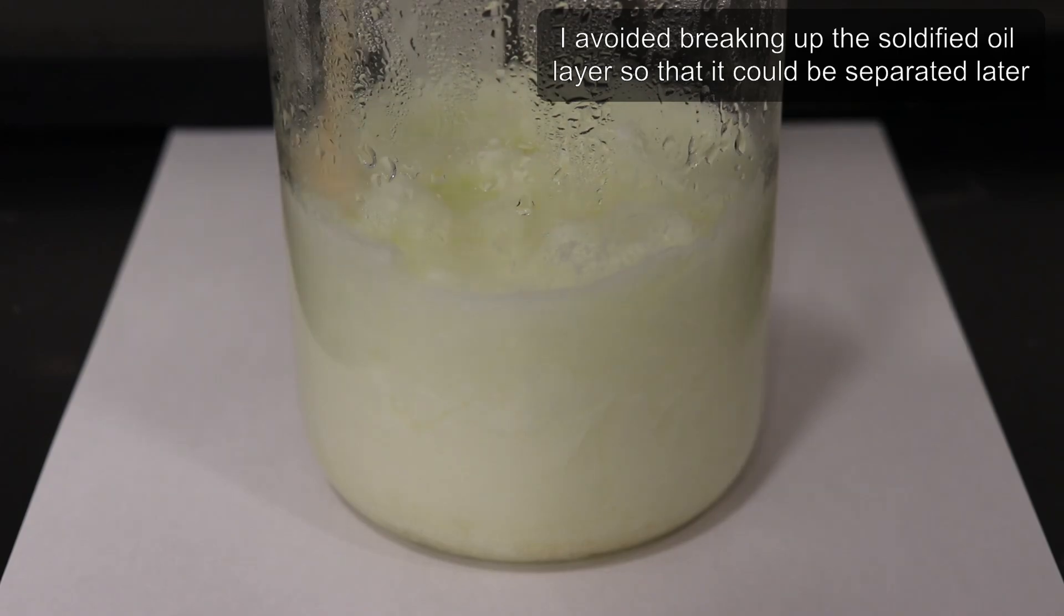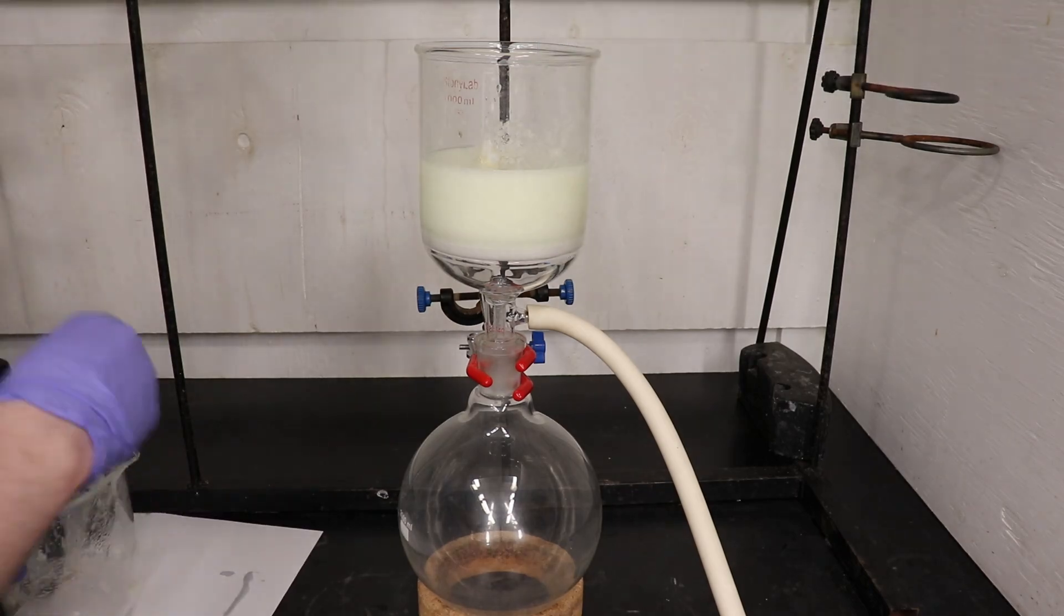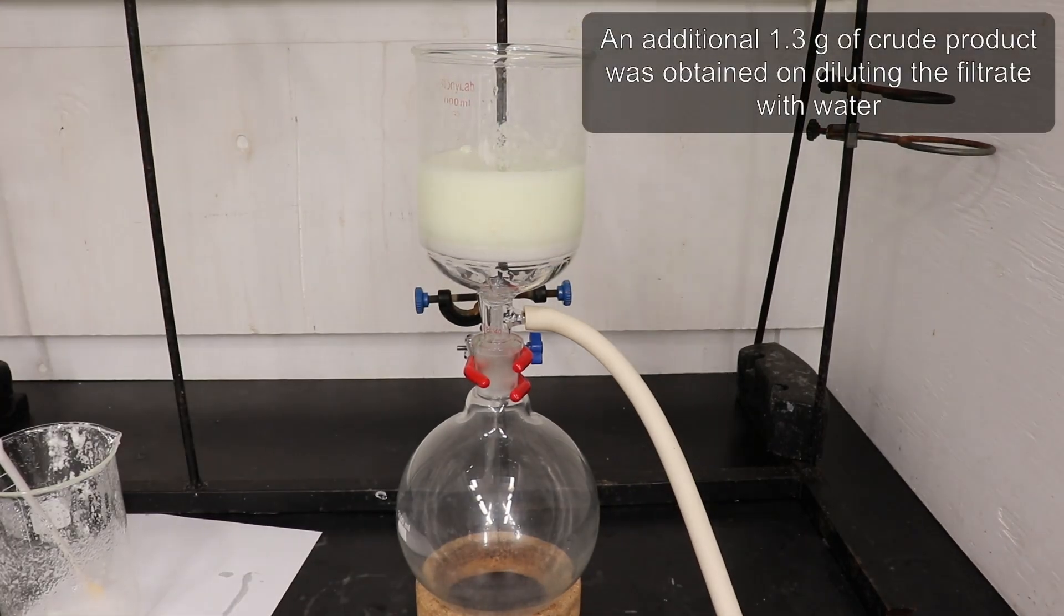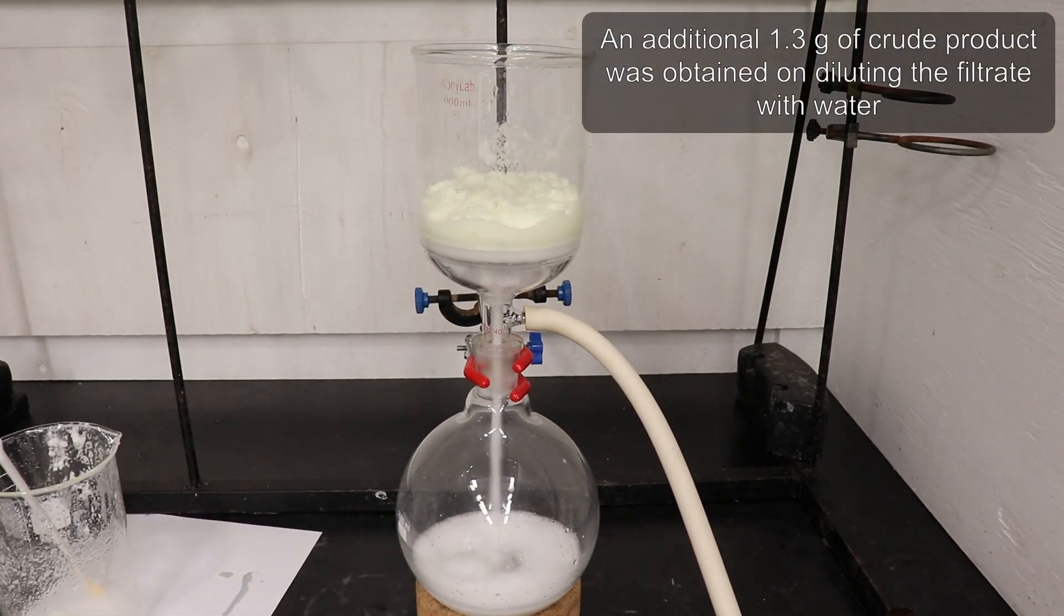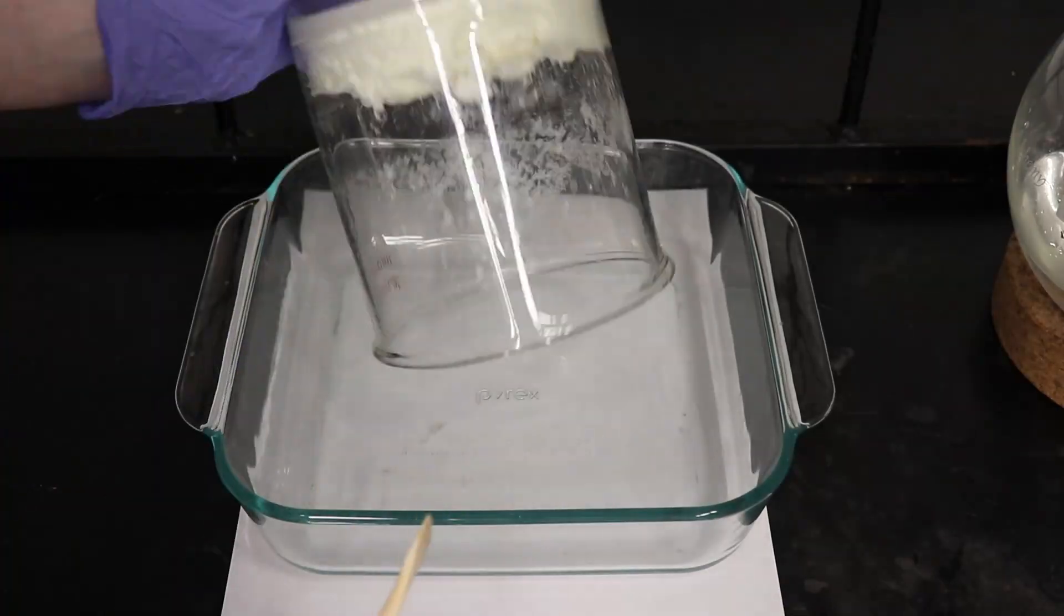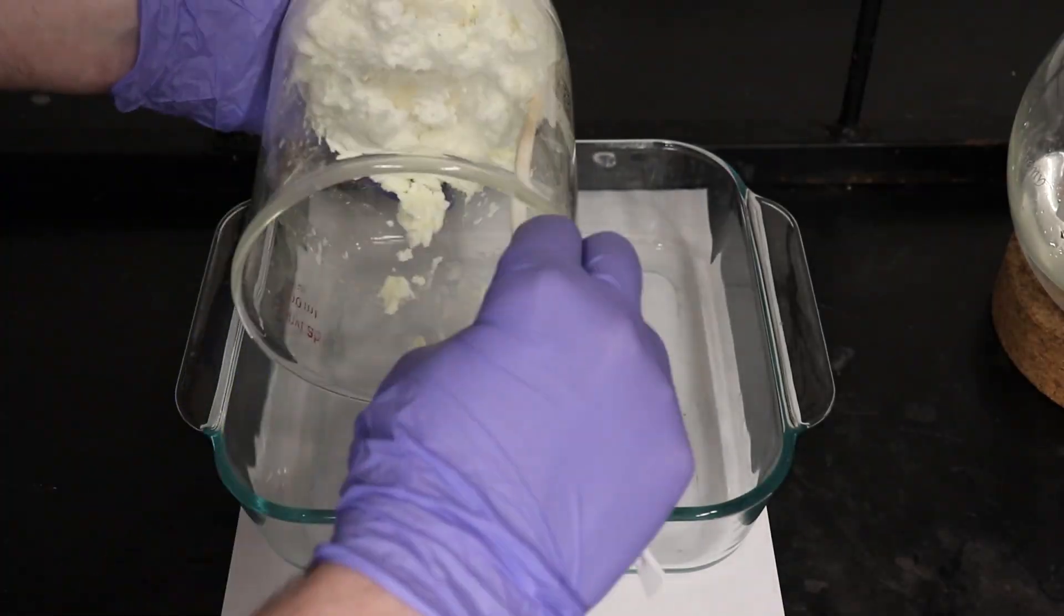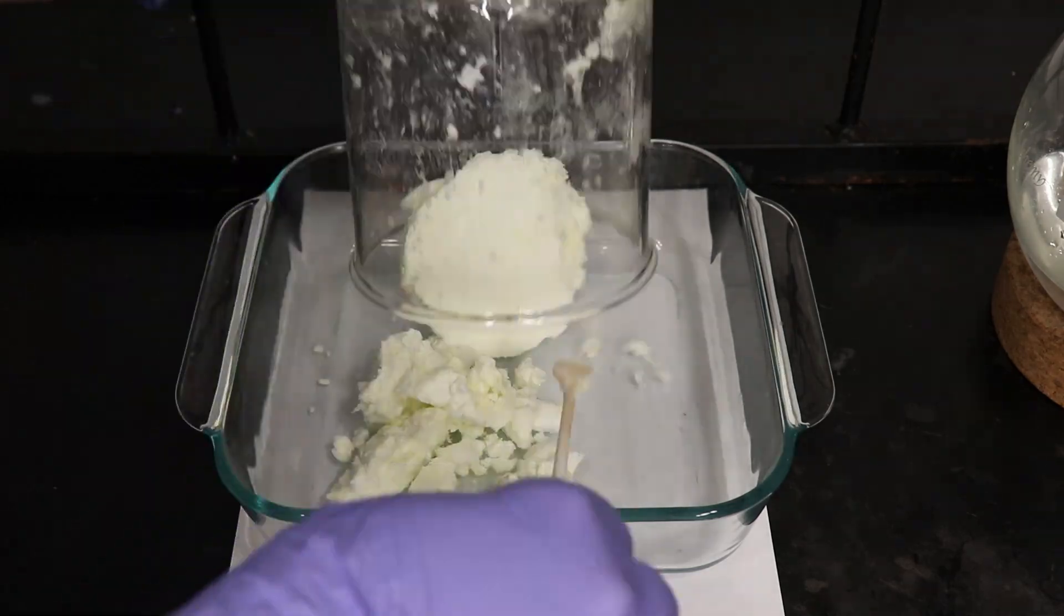I cooled the beaker in the fridge to ensure maximal precipitation, then carefully broke up the crystalline material without disturbing the oil layer too much. I filtered the crystalline slurry, dried thoroughly on the pump, then moved the material onto a glass dish to dry to constant weight in air.